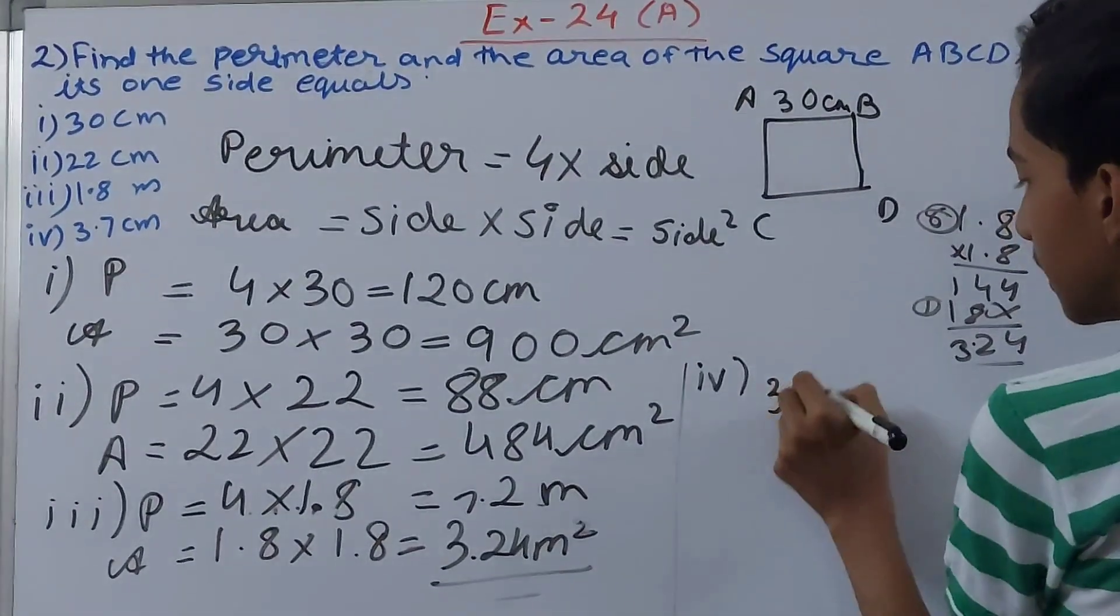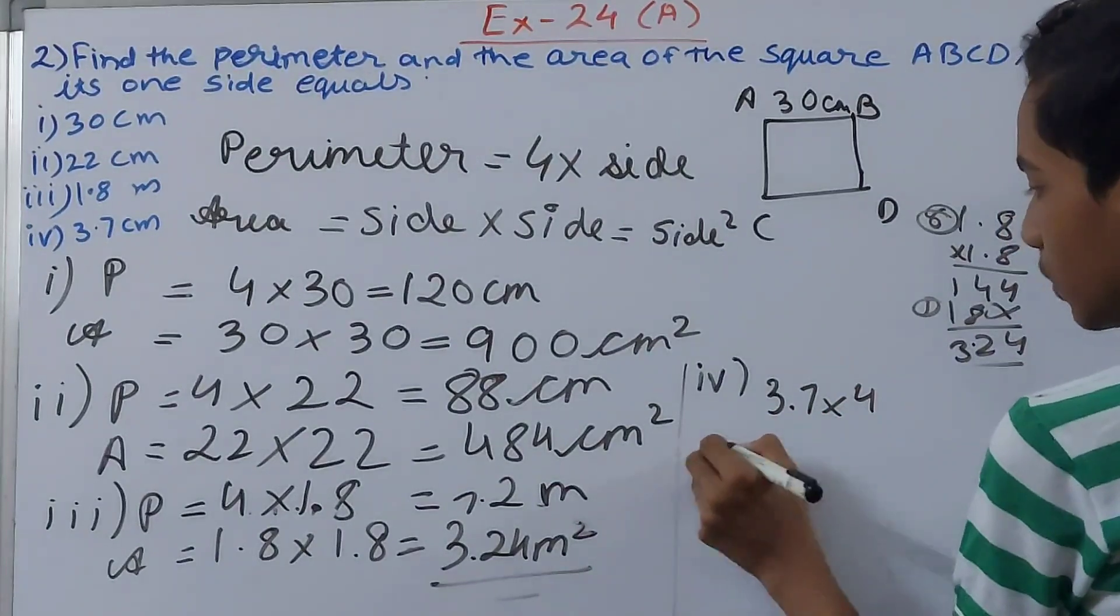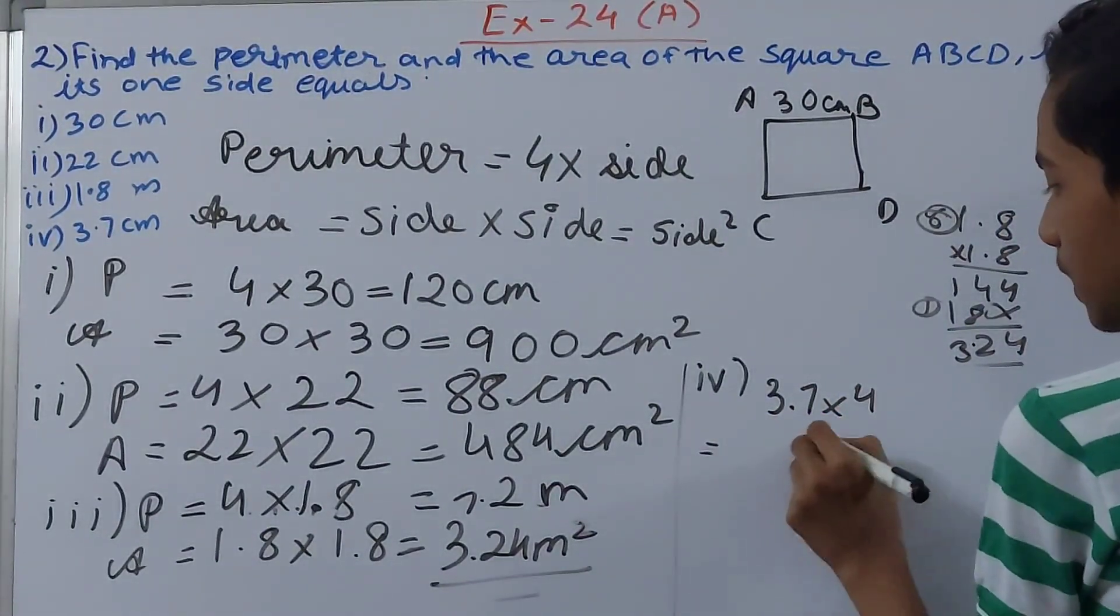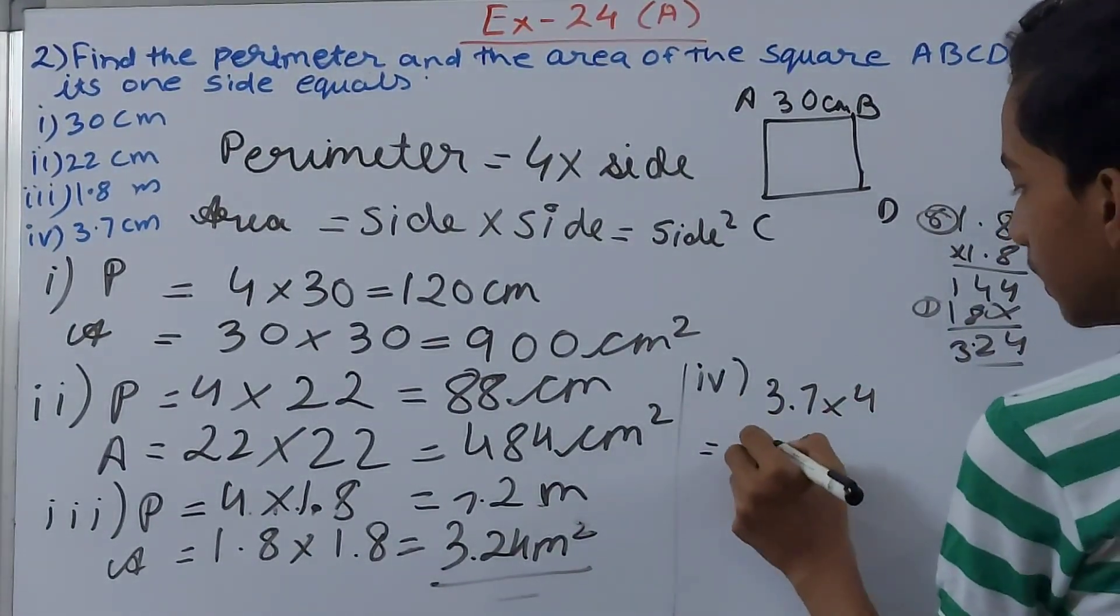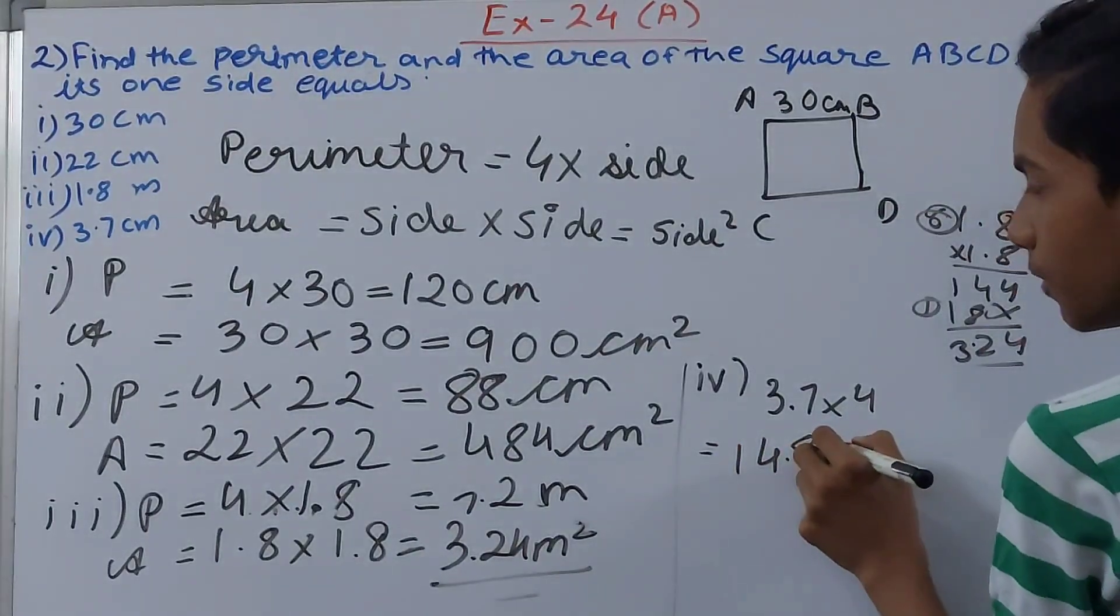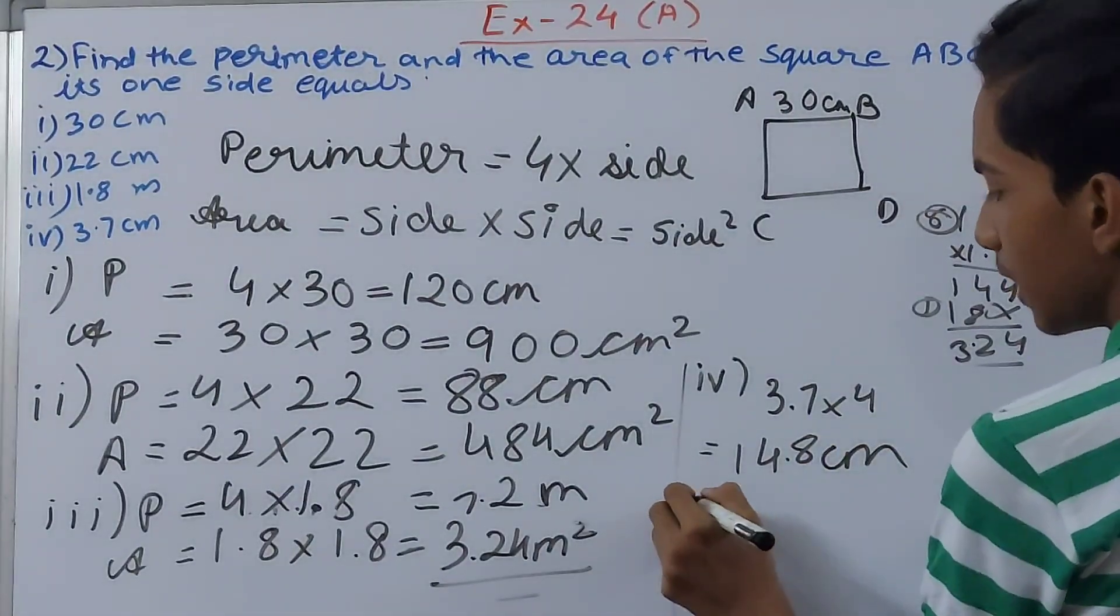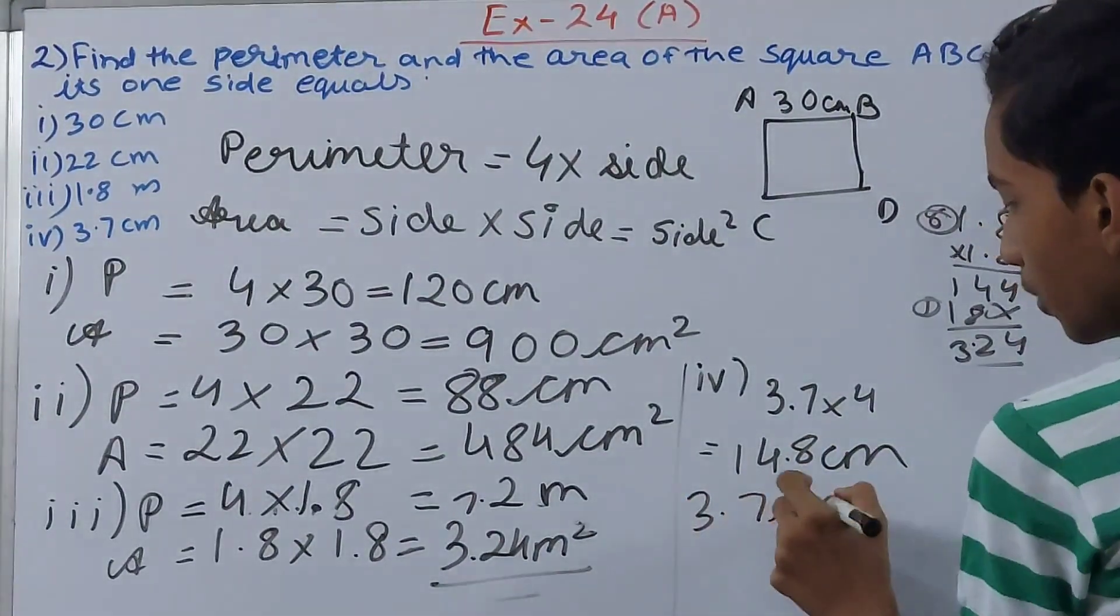And next, the last one. The perimeter calculation gives us, let's see, 7, 4, 8, 2, 4, 3, 12, and 2, 14, in centimeters.